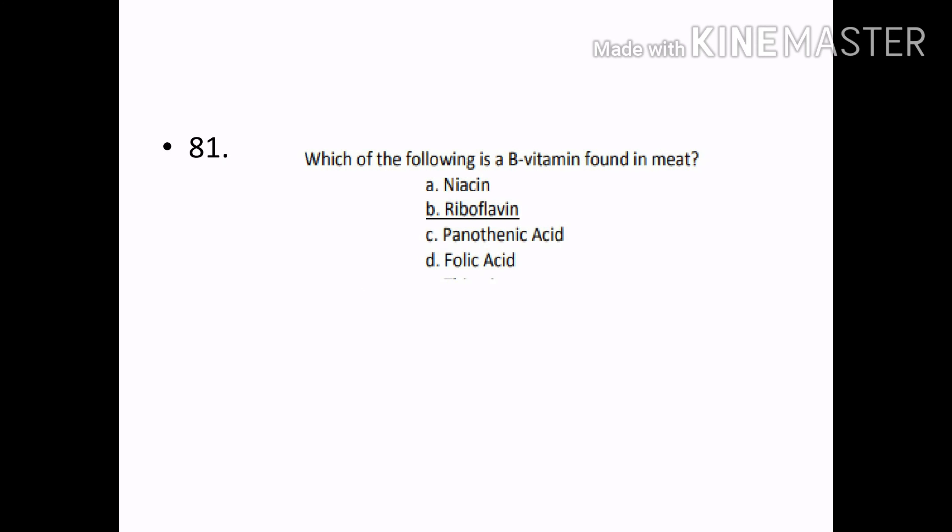Which of the following is a B vitamin found in meat? Options — Niacin, Riboflavin, Pantothenic acid, Folic acid. Correct answer: Option B — Riboflavin.